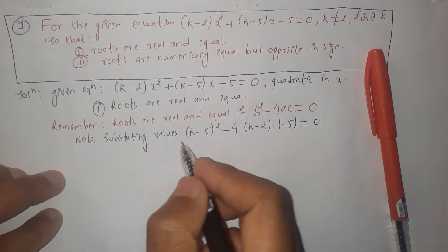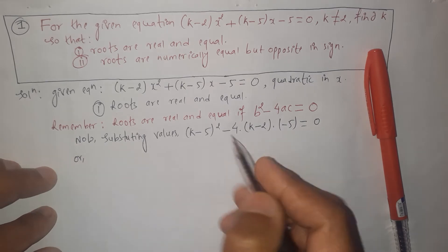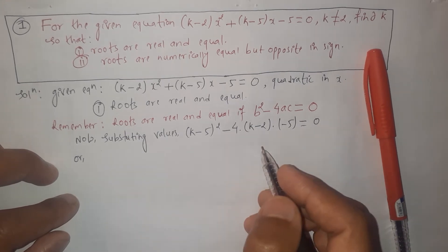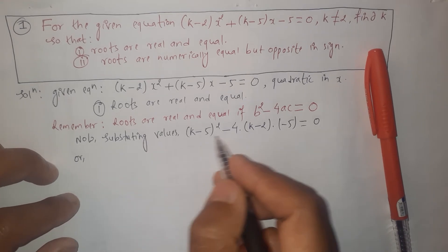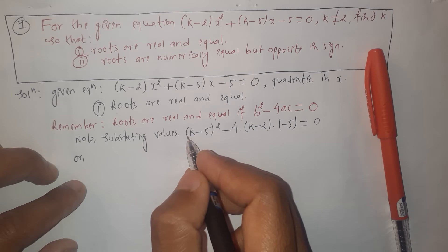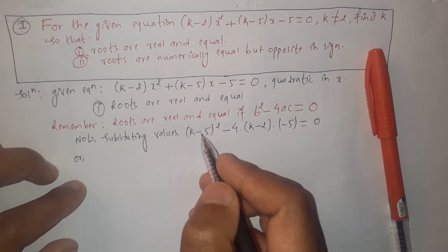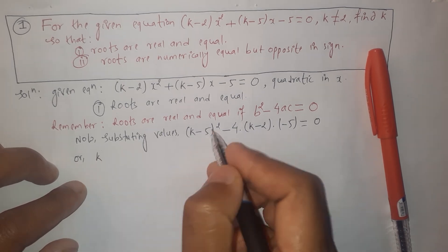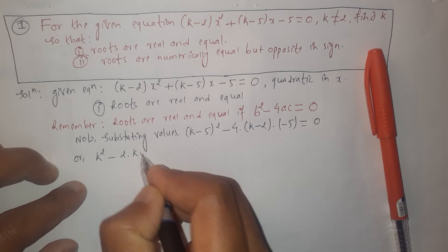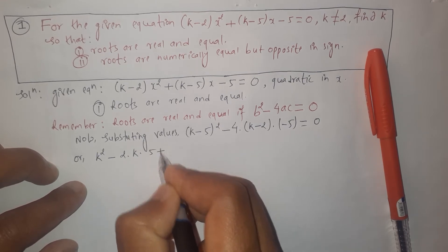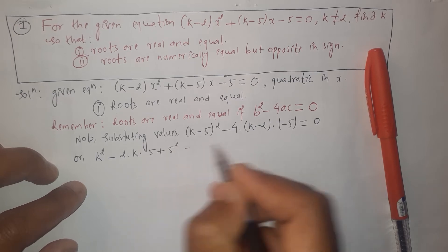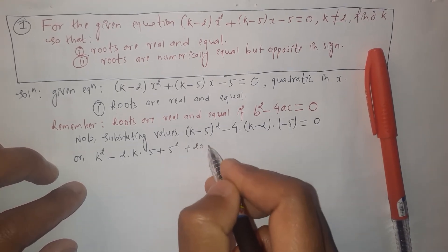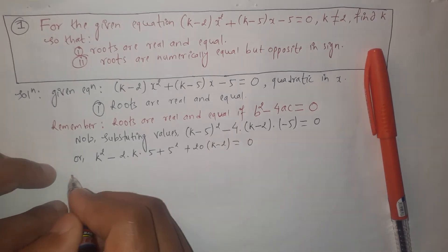This should equal 0, so we get: (k minus 5) whole squared minus 4 times (k minus 2) times (minus 5) equals 0. Simplifying, we expand (k minus 5)² using the formula (a minus b)² equals a² minus 2ab plus b², giving k² minus 10k plus 25. The minus times minus gives plus, so plus 4 times 5 times (k minus 2), which is 20(k minus 2), equals 0.